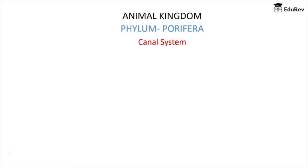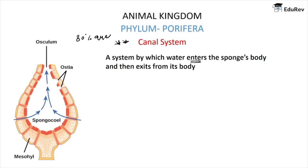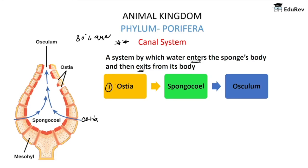The canal system is also a very important topic from this phylum — 80% of questions from porifera come from this topic. The canal system is a system by which water enters the sponge's body and then exits. Water enters from the surface of sponges through the ostea, travels internally, and exits from the osculum. The pathway: water enters through the ostea, passes through the spongocoel, and exits from the osculum.